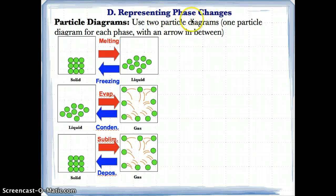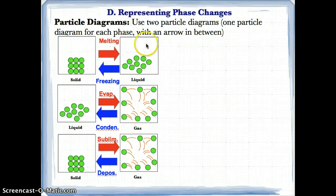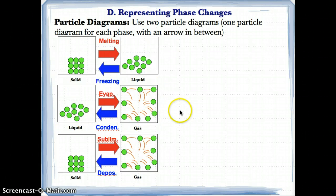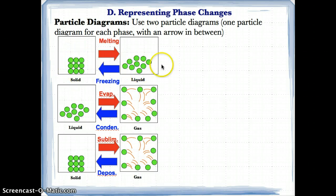Now let's talk about representing phase changes. You can represent phase changes using particle diagrams. For phase changes, you use two particle diagrams — one box for each phase — and you draw an arrow in between to demonstrate that it's changing phase from one to another. The arrow shows that it's changing. We already know how to draw particle diagrams for solids, liquids, and gases individually, so now we just incorporate them into representing phase changes.